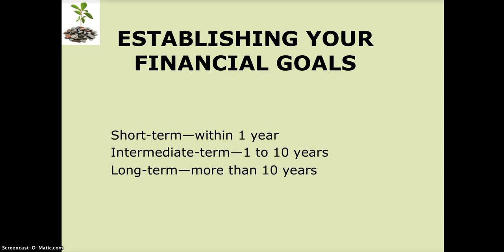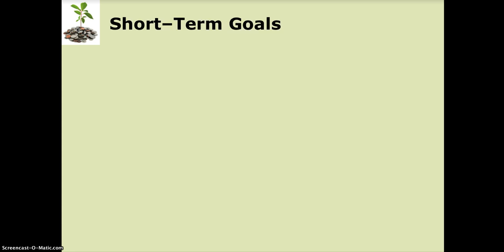Establishing your goals can be done over short, intermediate, or long-term goal structures. Short-term goals are typically less than a year. Intermediate goals might be up to 10 years. And long-term goals, like saving for retirement, might extend well beyond that.